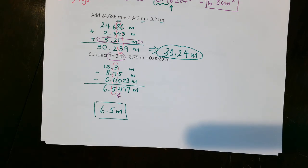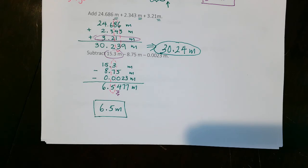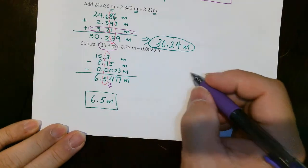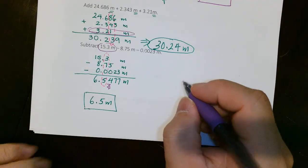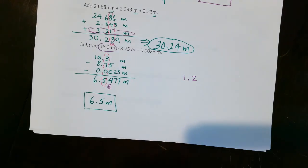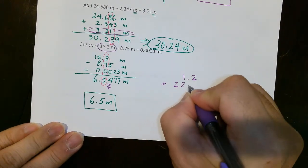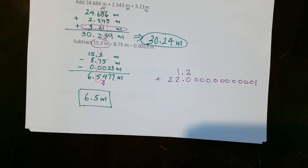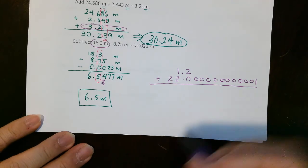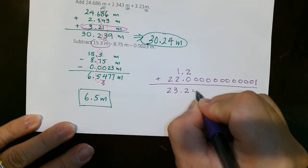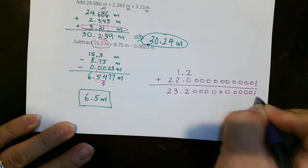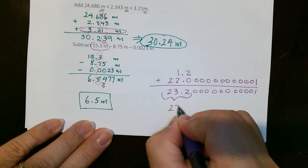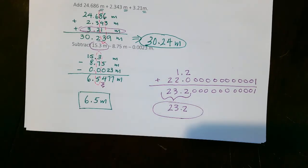Some people confuse least sig figs with least precise for addition. For example, 1.2 + 22.000000001: when you add, you get 23.20000000001. That trailing part is very insignificant, so you simply round to 23.2.